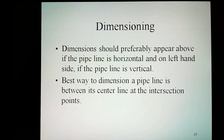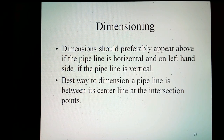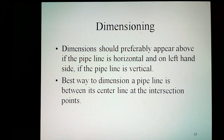Dimensioning: dimensions should preferably appear above the pipeline if it is horizontal, and on the left-hand side if it is vertical. The best way to dimension the pipeline is between its centerlines at the intersection point. Try to keep all dimensions outside the piping view when possible. Dimensions should always be shown between points in the same plane, and one of the extension lines of the dimension should be the centerline of the running pipe.